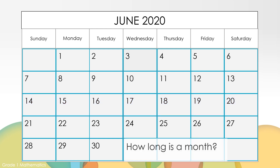How long is a month? June is a month. June has 30 days. Months have 28 to 31 days. Months are about four weeks.